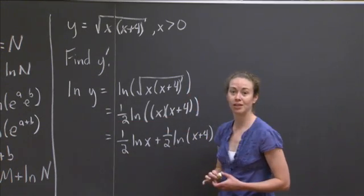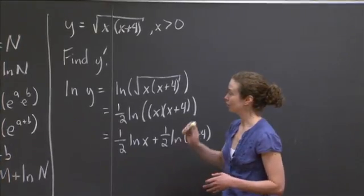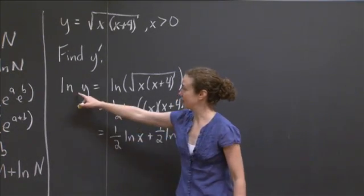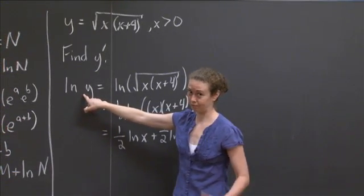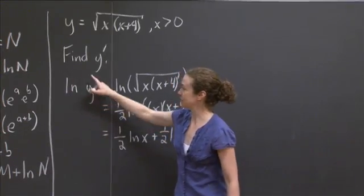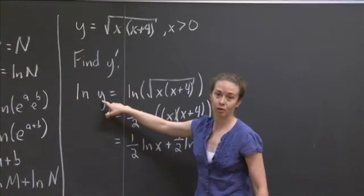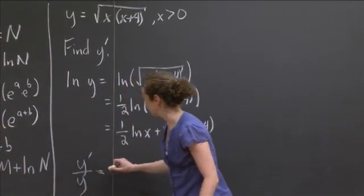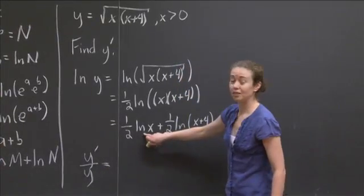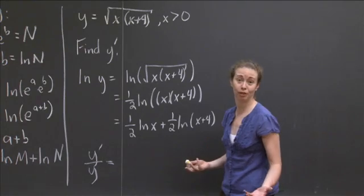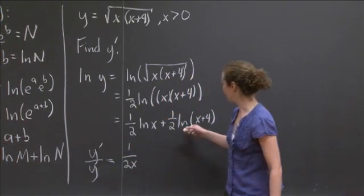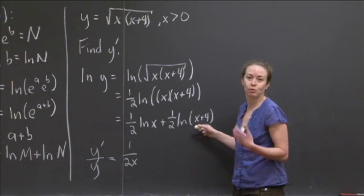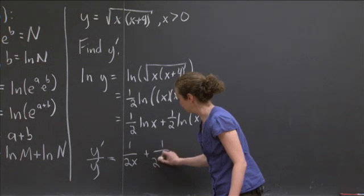Now I have natural log of y equal to an expression in x, so I can take the derivative of both sides. There's implicit differentiation here: the derivative of the left side gives y prime over y, because the derivative of natural log evaluated at y times the derivative of y gives y prime over y. On the right side, the derivative of natural log of x is 1 over x, giving 1 over 2x. Then using the chain rule, the derivative of natural log of x plus 4 is 1 over x plus 4 times 1, giving 1 over 2 times x plus 4.